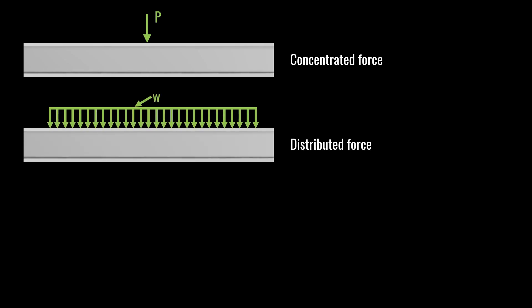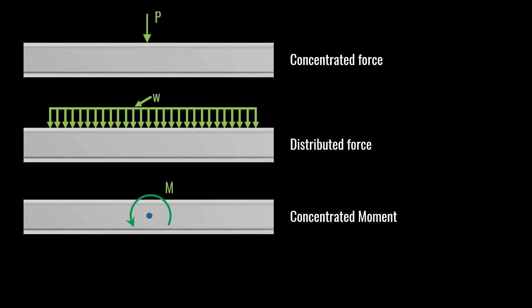Loading can be applied in a number of ways. The most simple and common is the concentrated force or point load, which can be at mid-span or anywhere along the length of the beam. The next type is distributed load, or uniformly distributed load, where the load is distributed evenly along the length of the beam. The third type is the concentrated moment, which is less common in engineering practice.